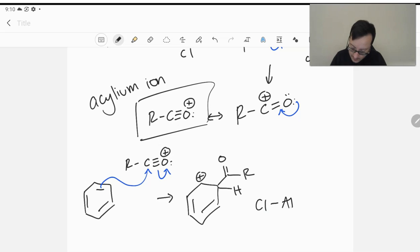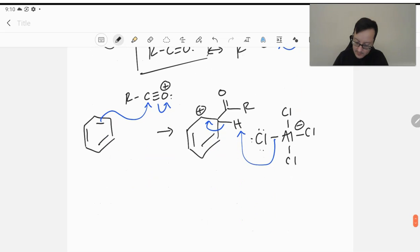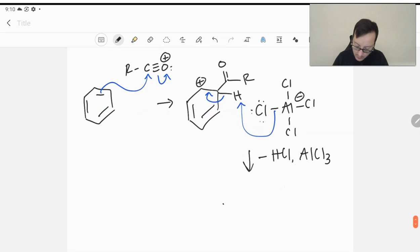And our dear friend, the chlorine that's on the aluminum, is going to come on in and grab that proton, just like with any other EAS reaction. And we produce HCl and we regenerate our catalyst, and we go ahead and reform our aromatic compound with the ketone.